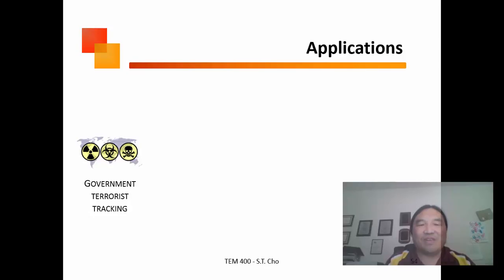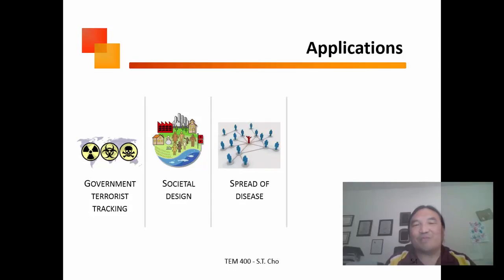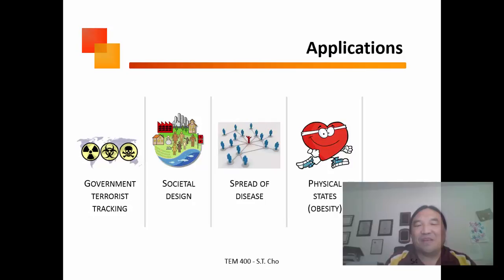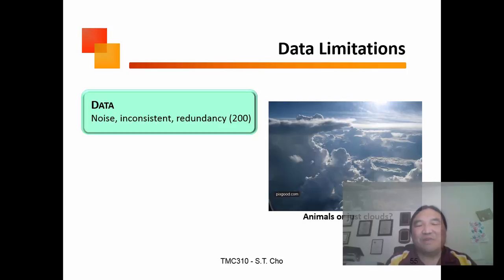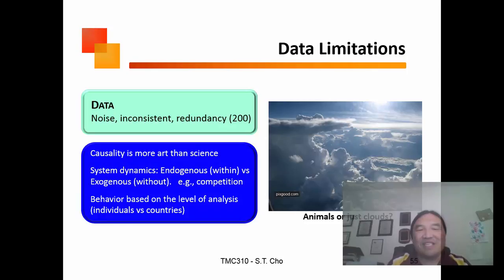Network theory is used for terrorist tracking, societal design, spread of disease, physical states, and predicting events. All data has value but also limits — you can get noise, relevant points, and duplicating patterns where you're not learning anything new. The thing about causality is that it tends to be more art than science.